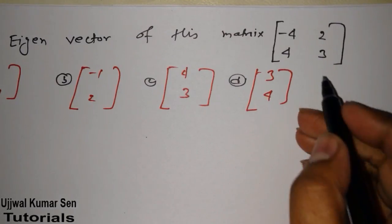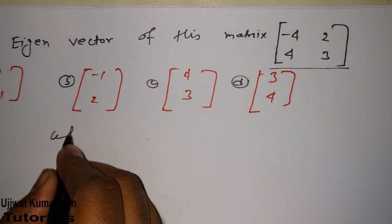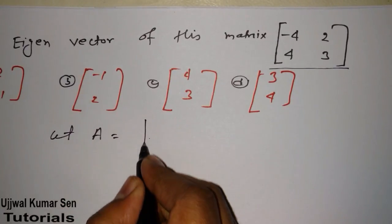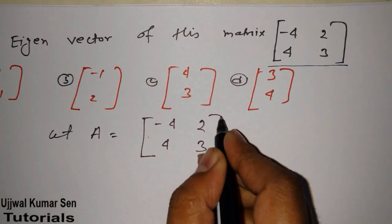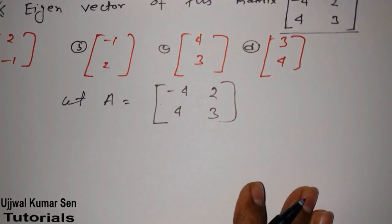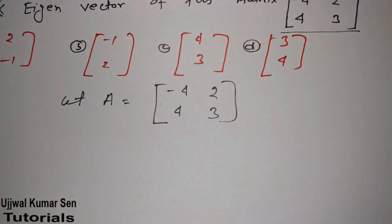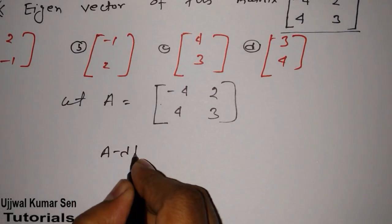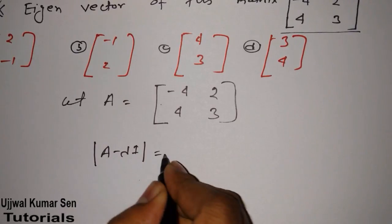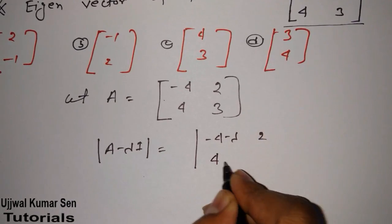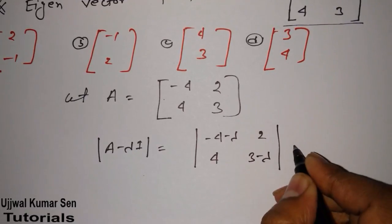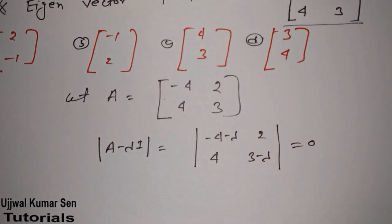From the question we have here: let A be equal to the matrix with entries minus 4, 2, 4, 3. For finding out eigenvectors I first need to find eigenvalues. Therefore, A minus lambda I gives us the determinant: (minus 4 minus lambda)(3 minus lambda) minus 8 equals 0.